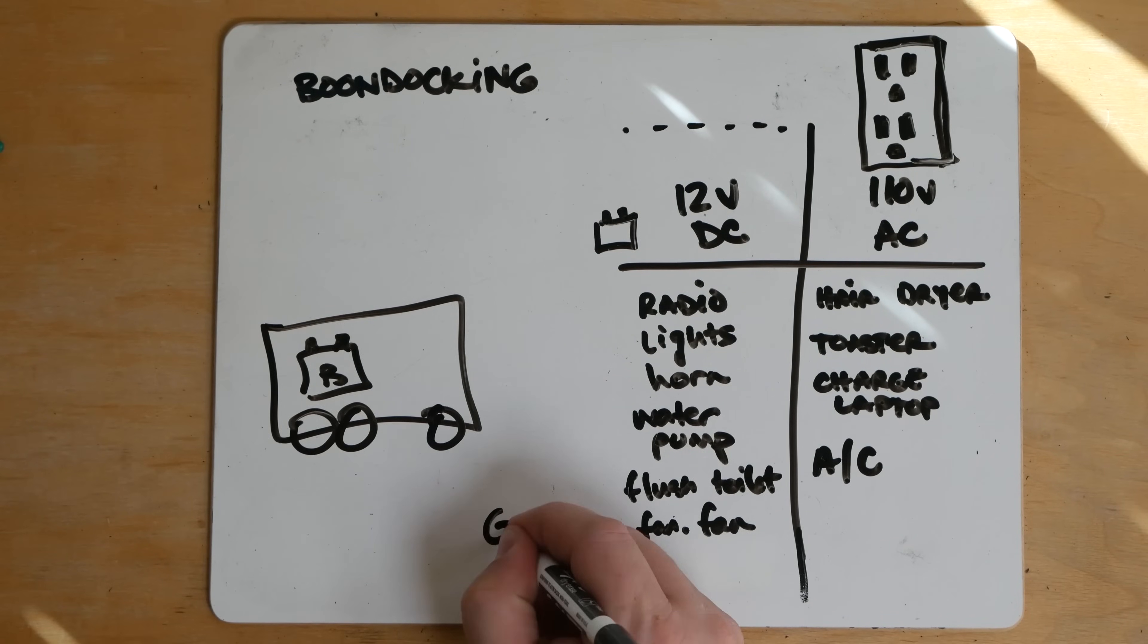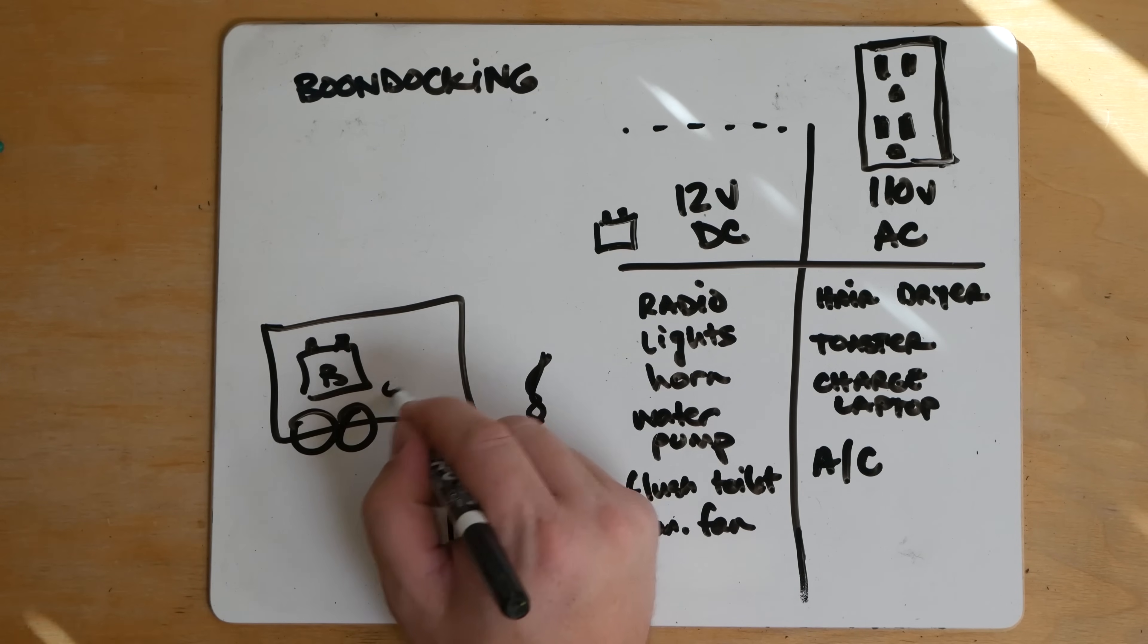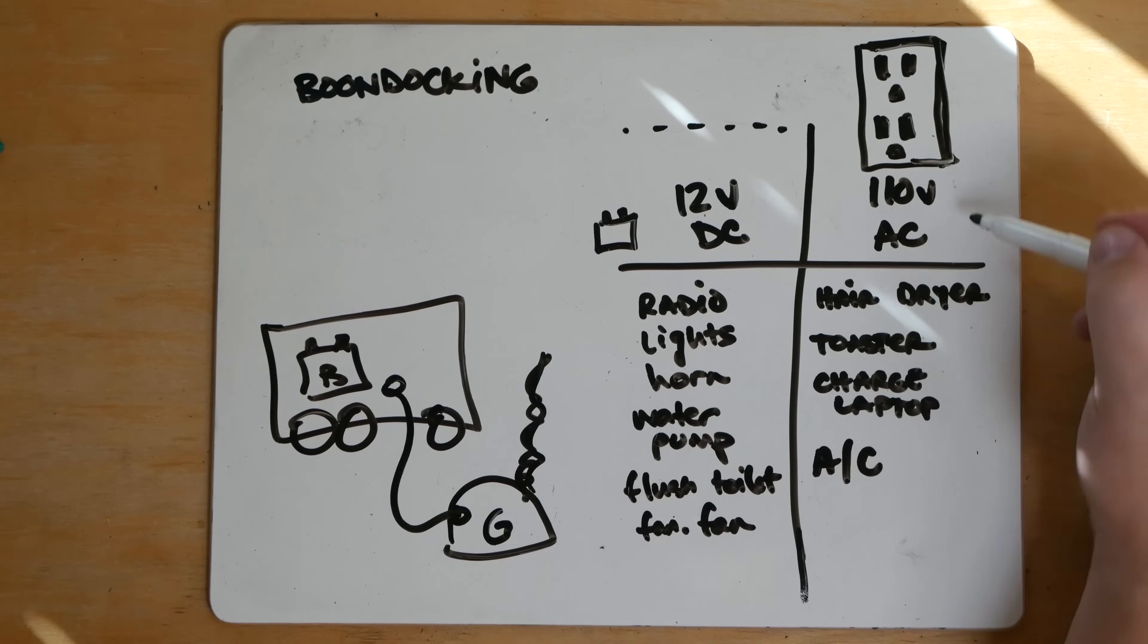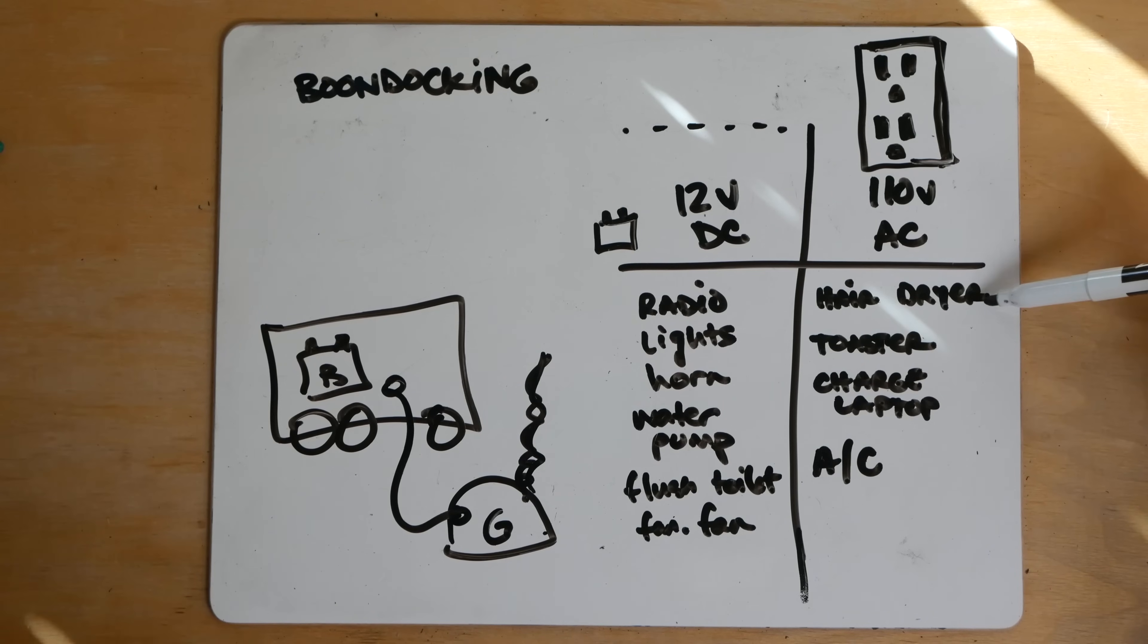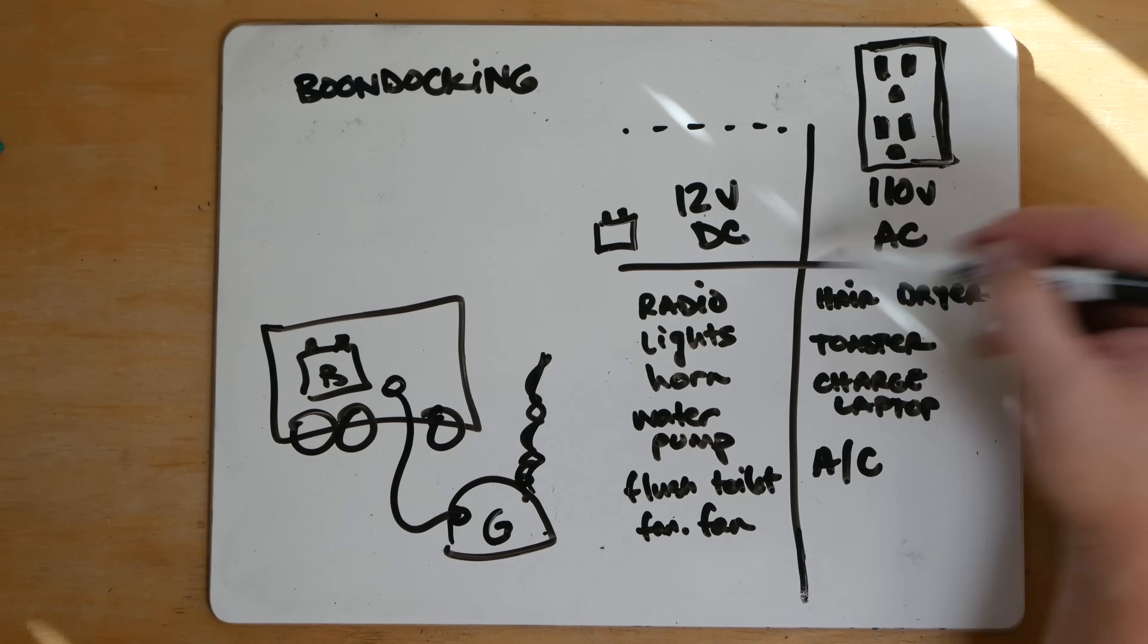But let's say you pop out your generator. Now your generator runs on gasoline. It's like a lawn mower. You start it up. It starts going. Now what you can do, a generator generates power. You can connect your cord and now you can start running 110 stuff now that you have a generator. Now depending on the size of your generator will depend on how much energy it can produce. Most little suitcase size generators can't do enough for a hair dryer but they could do enough to charge your laptop or charge your phone. Now a lot of class A's come with giant generators that can pretty much run the whole RV which is pretty cool. So that is your option if you want 110 when boondocking.